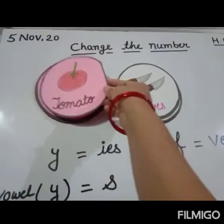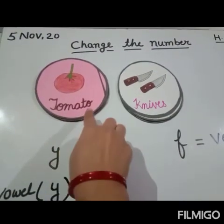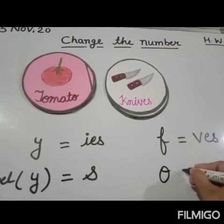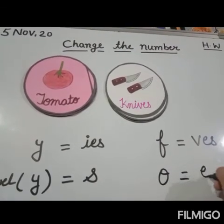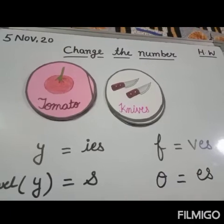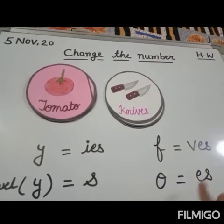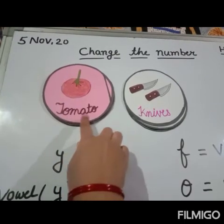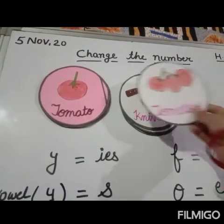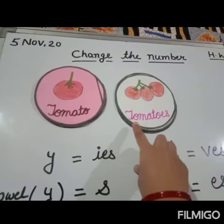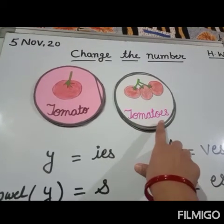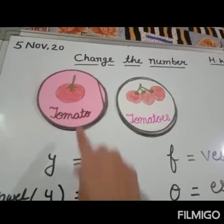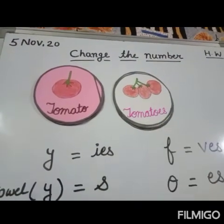Now let's see another form. Tomato — whenever O comes at the end, we use E-S with that O. What do we use? E-S. Tomato: T-O-M-A-T-O. When it becomes plural, what happens? Tomatoes — T-O-M-A-T-O-E-S. So with O at the end, we added E-S.